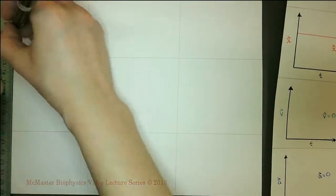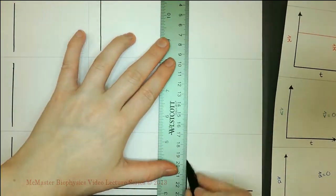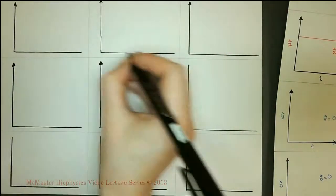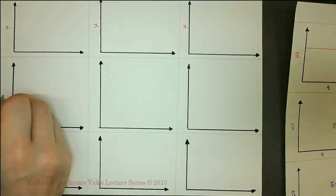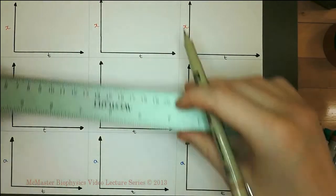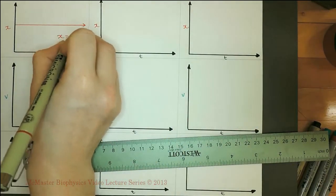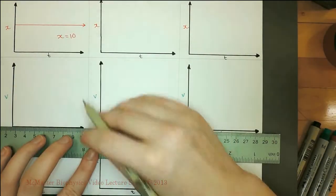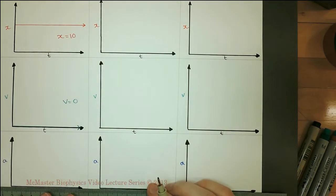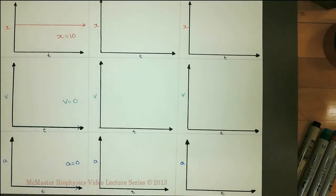Let's examine some examples of different types of motion. The first column is the position, velocity, and acceleration of an object with constant position. In this example, the object remains at a distance of 10 units from the origin. Because it is still, its velocity is zero. Because the velocity is unchanging, the acceleration is also zero.